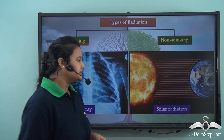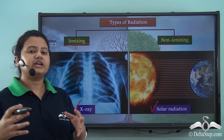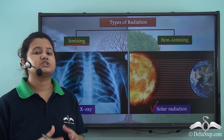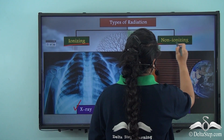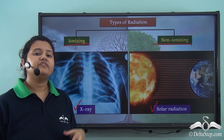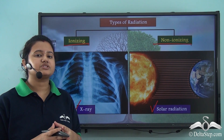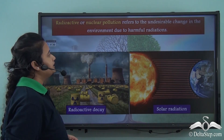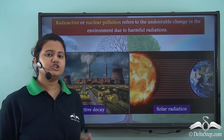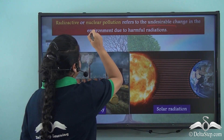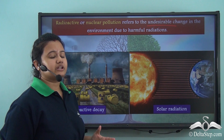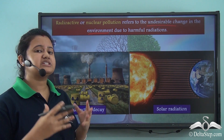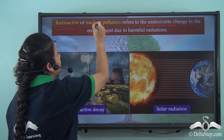Solar radiations cannot remove the electrons from atoms or molecules of different substances present in the environment, so these solar radiations are non-ionizing radiations. Now these radiations, whether ionizing or non-ionizing, are produced in the environment either naturally or due to man-made activities. These radiations often lead to undesirable changes in the environment and cause pollution. The type of pollution caused due to the release of harmful radiations in the environment is known as radioactive or nuclear pollution.